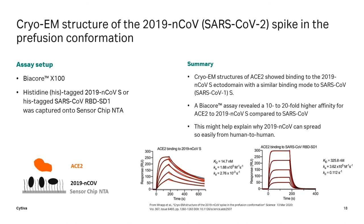ACE2 formed a much more stable complex with the 2019 variant, with affinity of 50 nanomolar compared to 326 nanomolar for the SARS variant. Interestingly, these results led investigators to come up with a possible explanation for why the 2019 coronavirus spreads more readily from person to person. The work was further validated and showed the higher affinity results from sequence changes in the receptor binding domain, and this has been proposed to underlie the higher transmissibility of SARS-CoV-2.